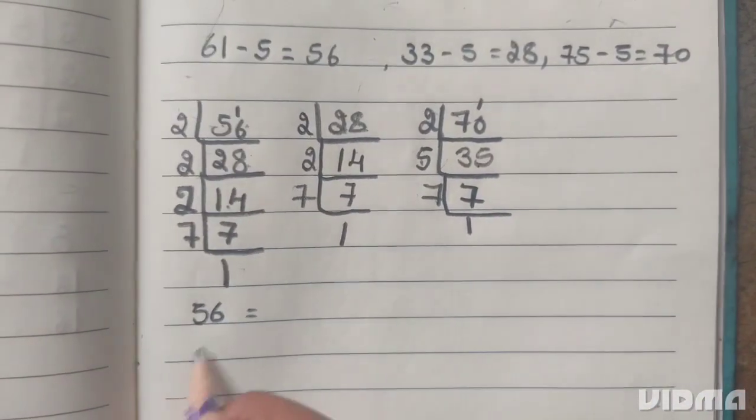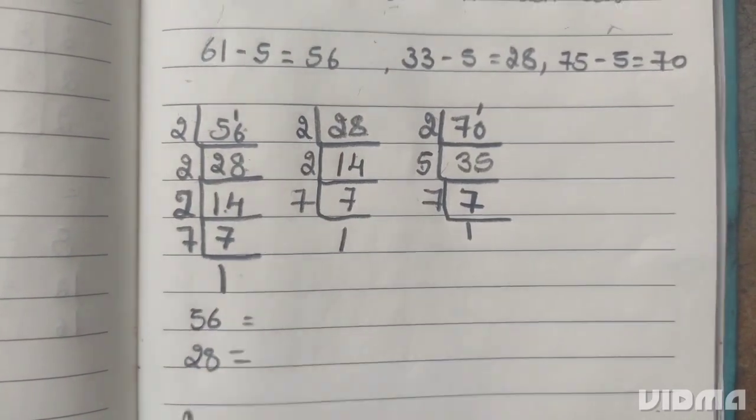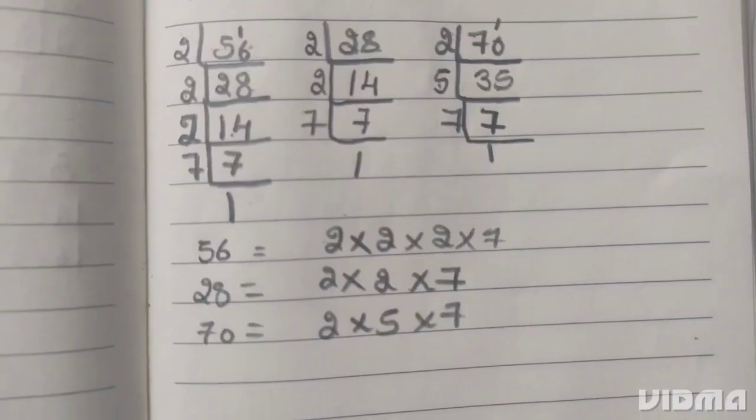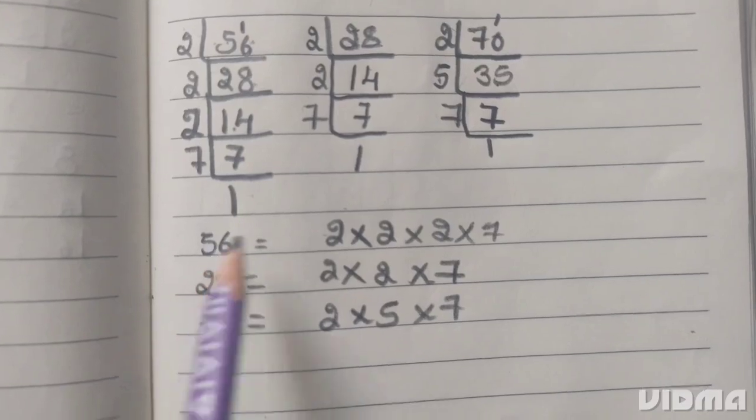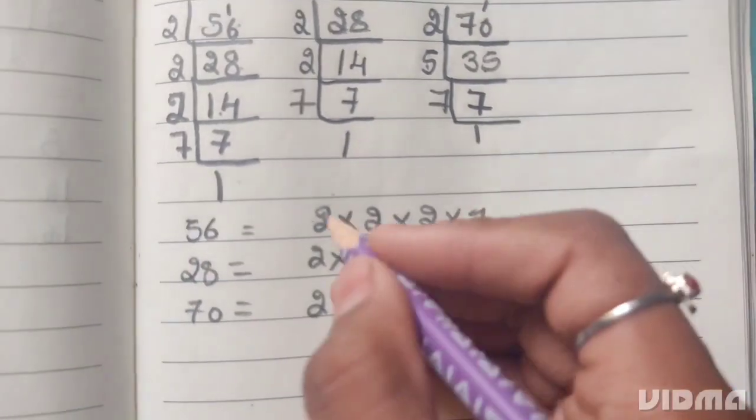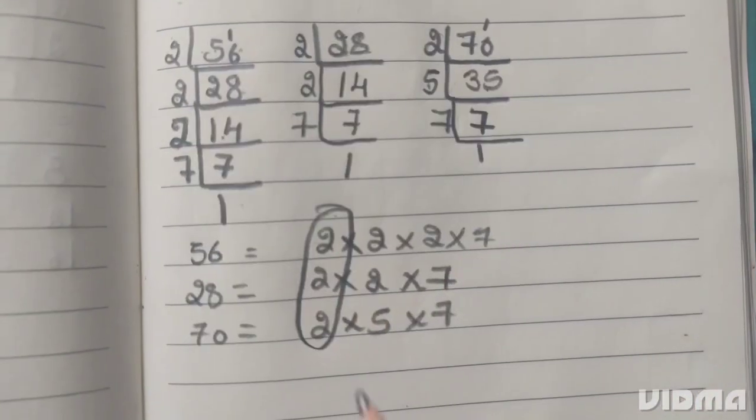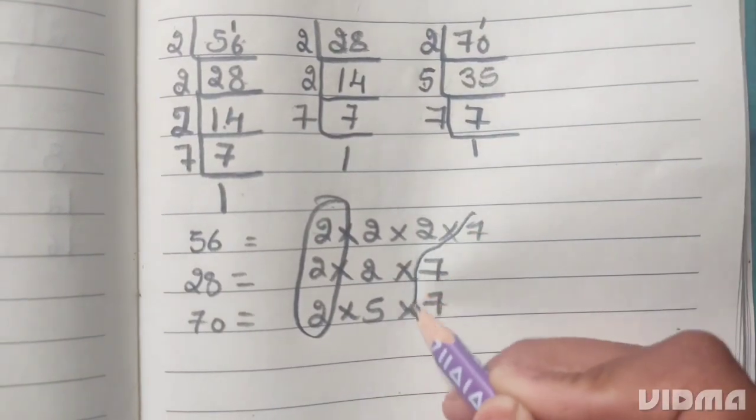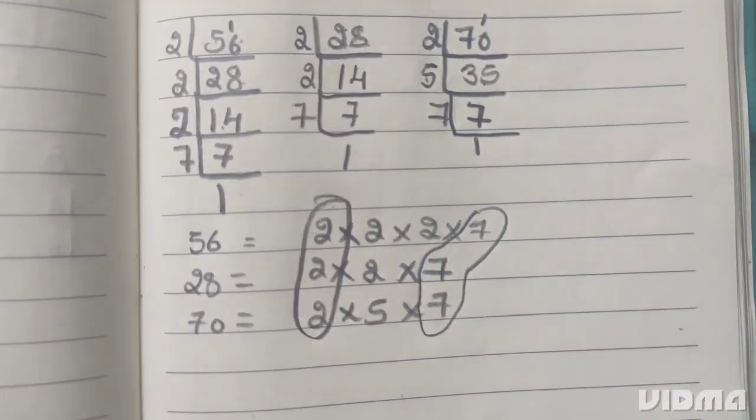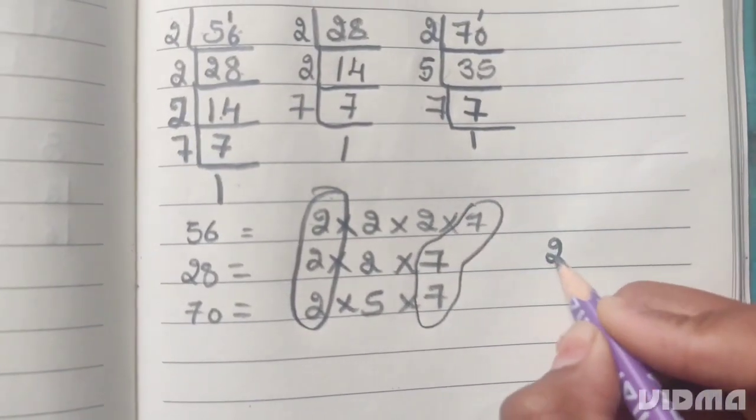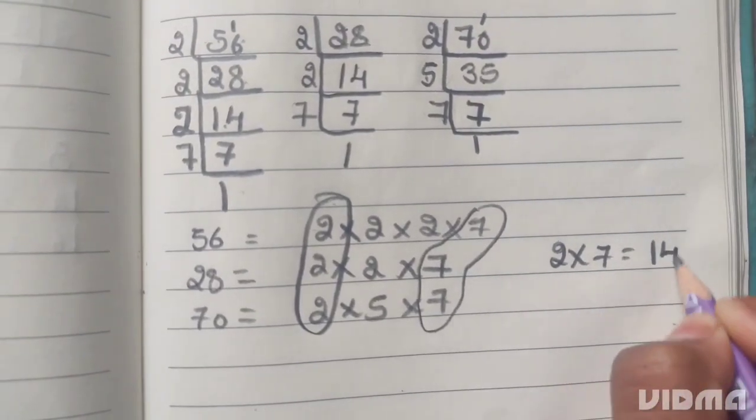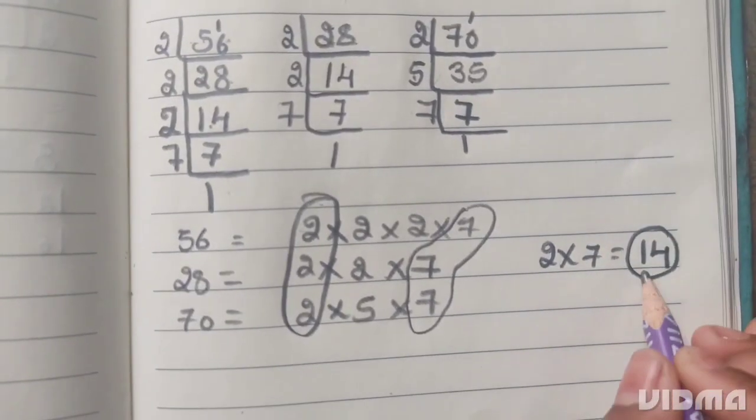Now we have 56, 28, and 70. Now we have to multiply the common factors. 2 multiplied by 7 equals 14. The required number is 14.